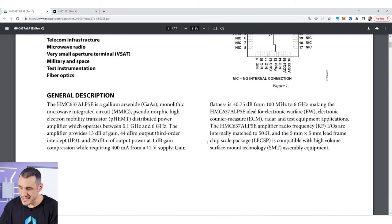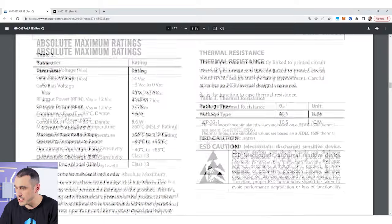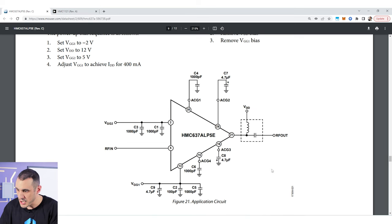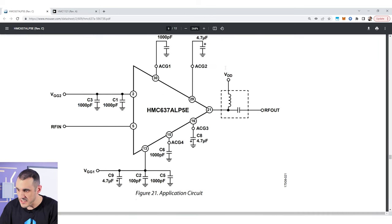So if we just scroll down they actually give you an example of a bias T here inside of this data sheet. So here in this example application circuit if I just zoom in you can see right here where the VDD connection is and this VDD connection involves essentially an LC filter that applies the VDD voltage to pin 21 and then it also allows the high frequency output to propagate through RF out.